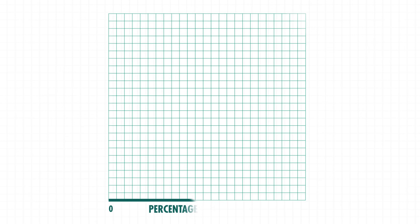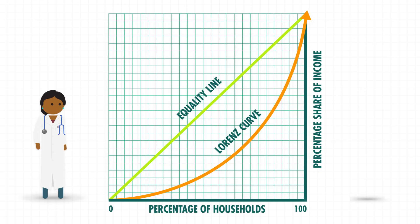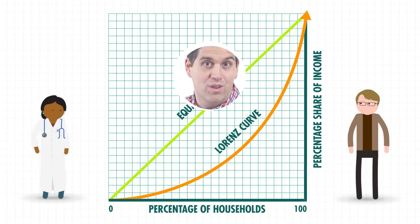Let's dive into the data for the United States. We'll start with Max Lorenz, who created a graph to show income inequality. Along the bottom we have the percent of households from 0 to 100%, and along the side we have the percent share of income. We're using households rather than individuals because many households have two income earners. This straight line represents perfect income equality, where every household earns the same income. While perfect income equality might look nice on the surface, it's not really the goal — when different jobs have different incomes, people have an incentive to become a doctor, an entrepreneur, or a YouTube star.